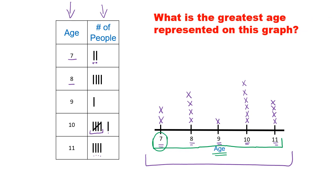What is the greatest or maximum age represented on this graph? They're asking us to look at the ages, not the frequency or quantity. So we're looking again at the ages: 7, 8, 9, 10, and 11. What is the oldest person represented on this graph? That's right — 11. So 11 years old is the greatest or maximum age represented on this graph.